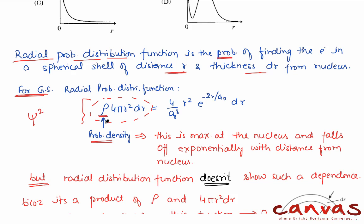When you talk about the probability density, the graph you have is something like this. Only talking about the probability density, not the radial probability distribution function. This probability density when compared with the radius or distance is maximum at the nucleus and falls off exponentially.